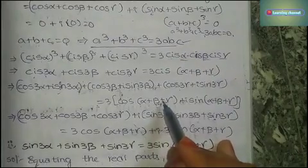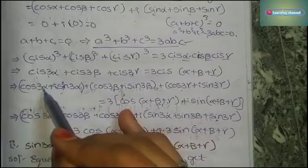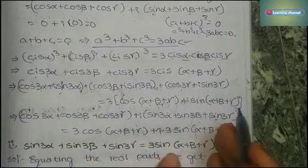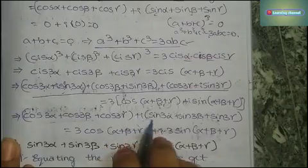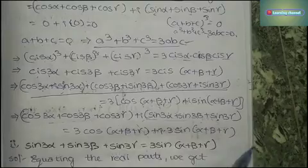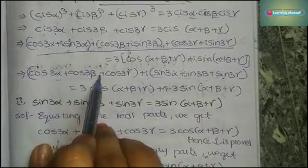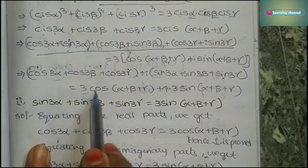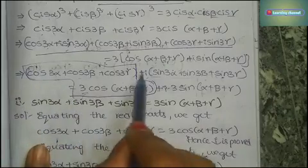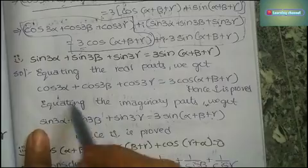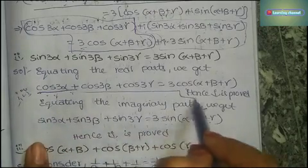Expanding: (cos 3α + i sin 3α) + (cos 3β + i sin 3β) + (cos 3γ + i sin 3γ) = 3(cos(α+β+γ) + i sin(α+β+γ)). Separating real and imaginary parts: the real part gives cos 3α + cos 3β + cos 3γ = 3cos(α+β+γ), and the imaginary part gives sin 3α + sin 3β + sin 3γ = 3sin(α+β+γ). These are the two identities to be proved.